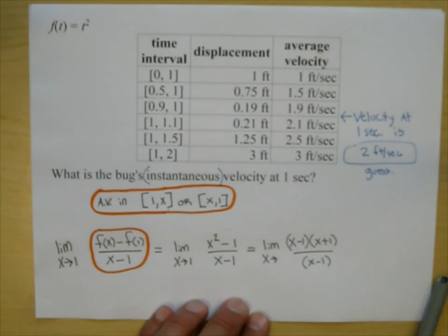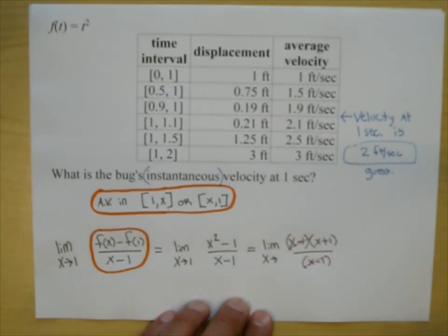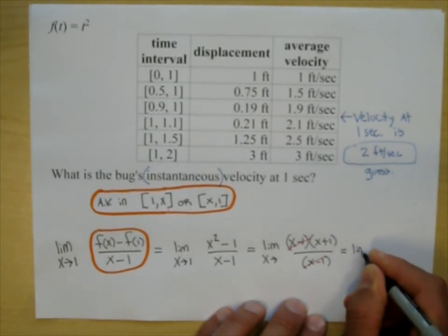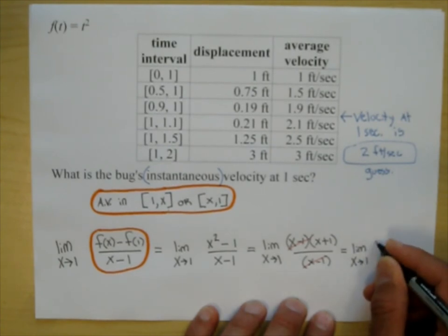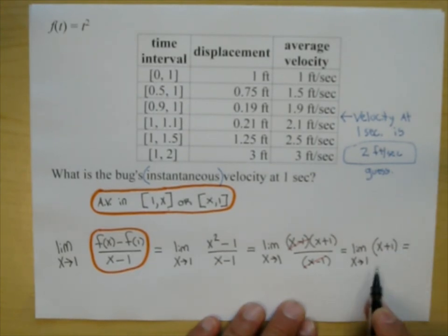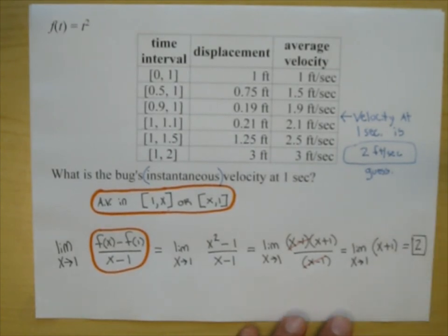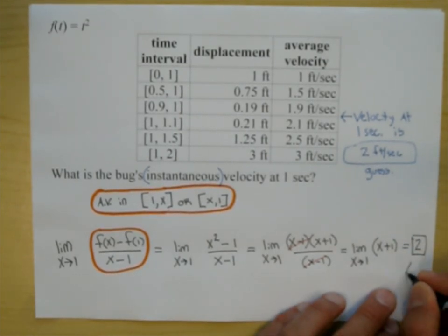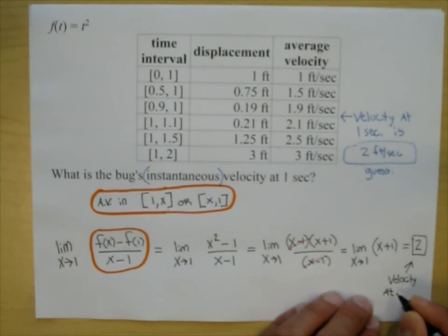We learned that we could just say this is the limit as x approaches 1 of just the expression x plus 1. What happens when you put 1 into that expression? You get 1 plus 1, which is 2 — which was our guess. This is the instantaneous velocity, or just velocity, at 1 second.